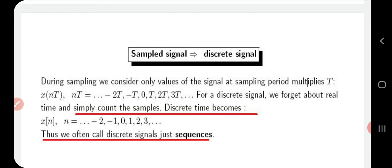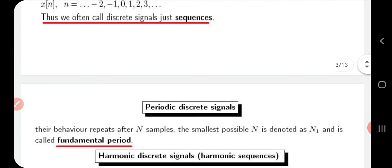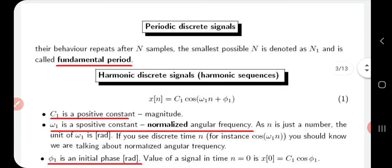So discrete signals are always represented as a sequence of numbers and are obtained by the periodic sampling of a continuous time signal. Now there are two types of periodic discrete signals: one is a periodic discrete signal and the other is a harmonic discrete signal. A periodic discrete signal, as the name suggests, repeats after N samples, and the smallest possible N is denoted as N1, called the fundamental period.